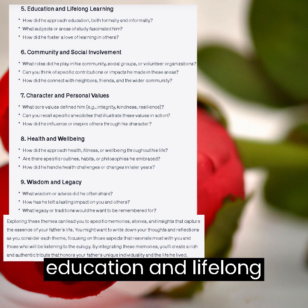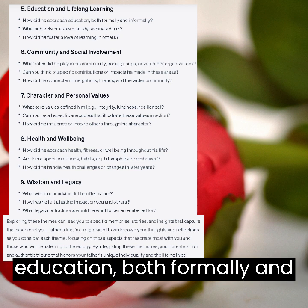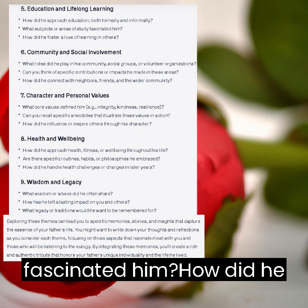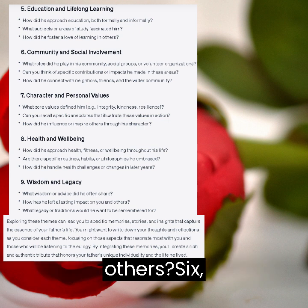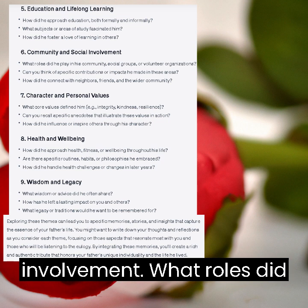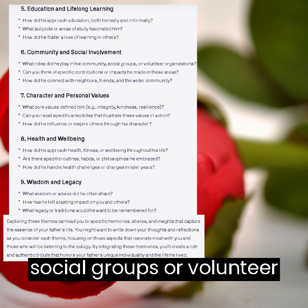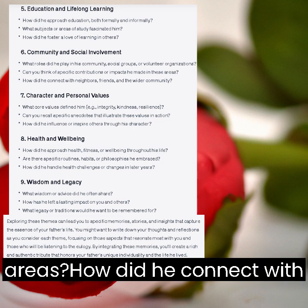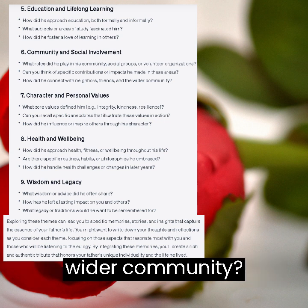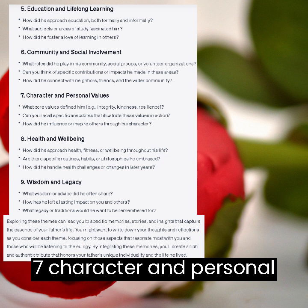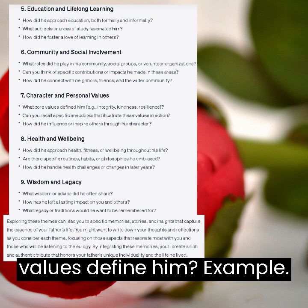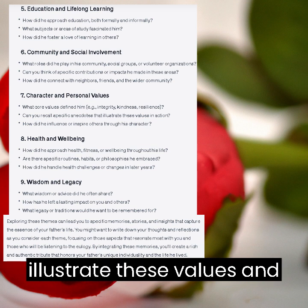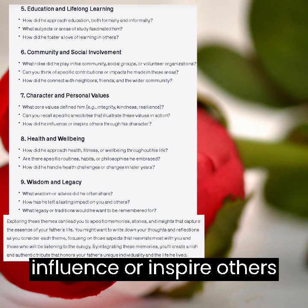5. Education and Lifelong Learning: how did he approach education, both formally and informally? What subjects or areas of study fascinated him? How did he foster a love of learning in others? 6. Community and Social Involvement: what roles did he play in his community, social groups, or volunteer organizations? Can you think of specific contributions or impacts he made in these areas? How did he connect with neighbors, friends, and the wider community? 7. Character and Personal Values: what core values defined him – for example, integrity, kindness, resilience? Can you recall specific anecdotes that illustrate these values in action? How did he influence or inspire others through his character?